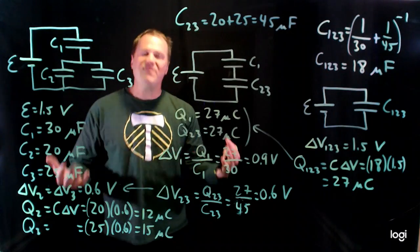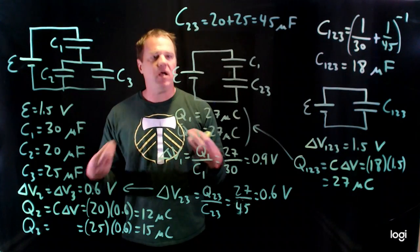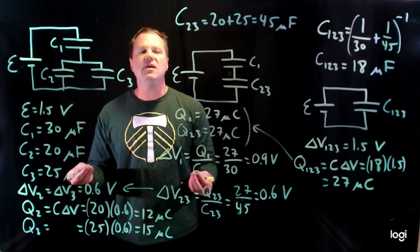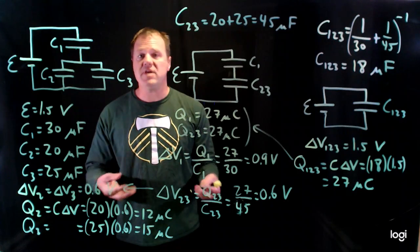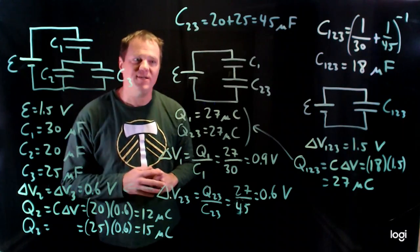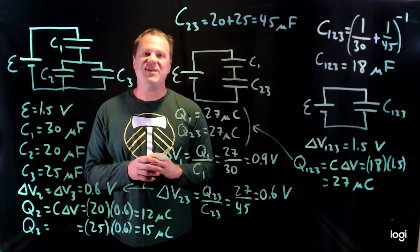So that's it. I have calculated the potential difference across each of the capacitors. I've calculated the charge of each of those capacitors. One other thing you could possibly do is calculate the electric potential energy stored in each of those. That's a pretty straightforward matter. But I didn't ask about that. So I'm not going to solve it. Plus I ran out of room. Thanks for watching and I'll see you next time.